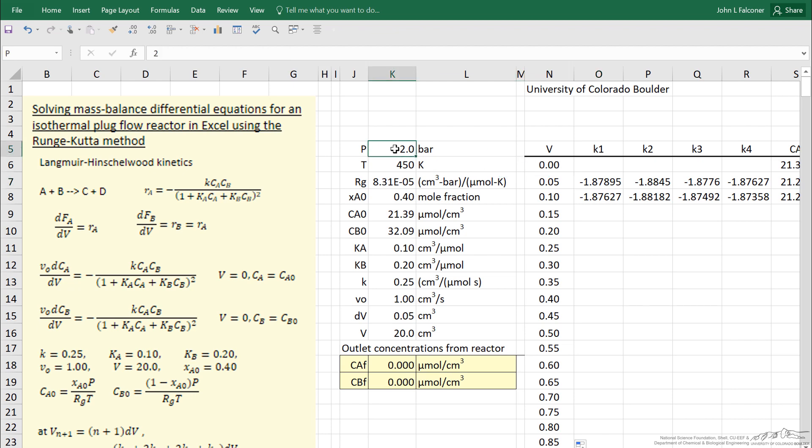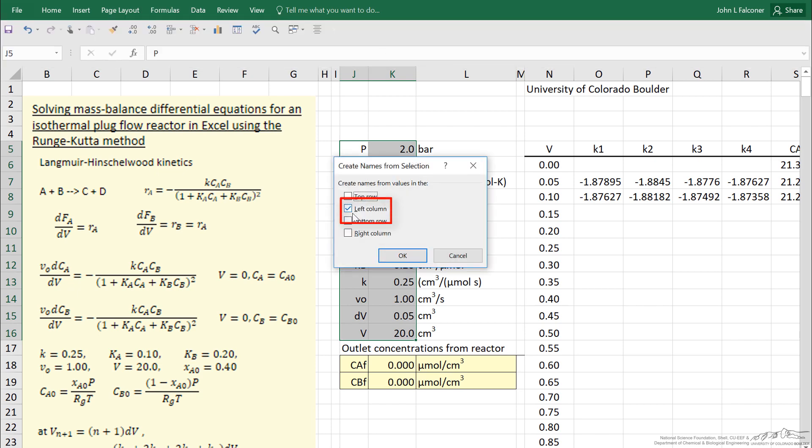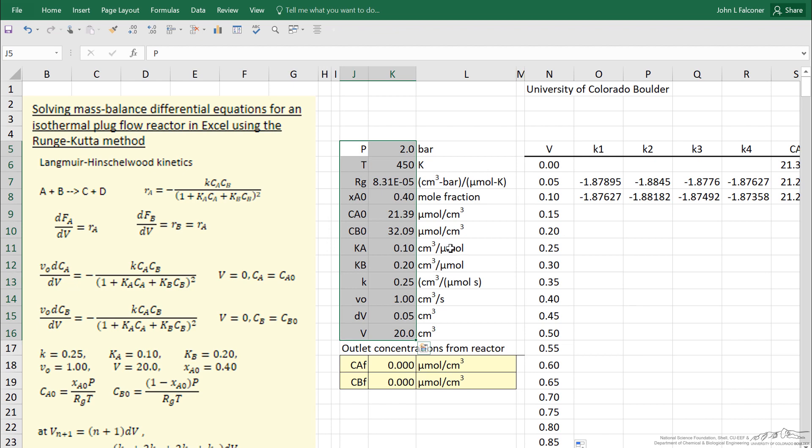Let me go back and point out what I've done here. Each of these cells—like the value is two for pressure, but notice the name is up here for pressure. I've named all of them by selecting the two columns, going to formulas, create from selection, and then I've selected the left column. I won't do this again since I've already done it.